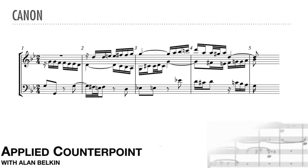Here's an interesting example: Variation 15, canon at the upper fifth by inversion. Since this canon isn't at the unison or the octave, and in addition it's by inversion, there's no problem here with harmonic monotony. However, the bass contributes enormously to enriching the numerous empty octaves and fifths between the canonic voices, as well as to creating rich chromatic harmony.